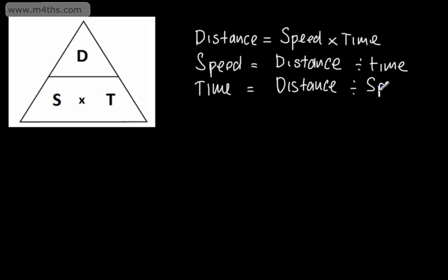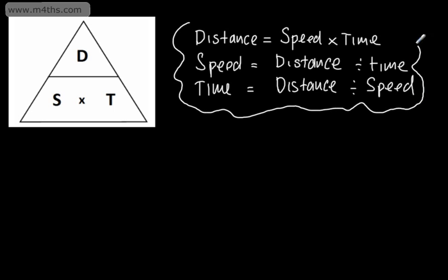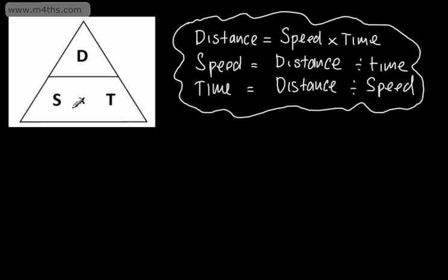All we're doing is using this little triangle to help us out. If you remember these formulas, that's perfectly fine and probably more convenient to use, but if not, you can use this triangle. Generally speaking, it won't be given in an exam formula book. To recap: if I want distance, I cover D and it's speed multiplied by time. If I want speed, I cover S and it's distance divided by time. If I want time, I cover T and it's distance divided by speed.